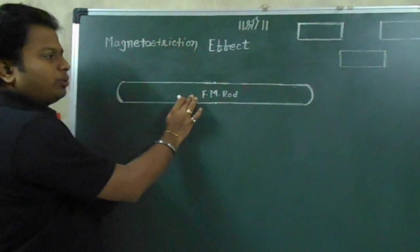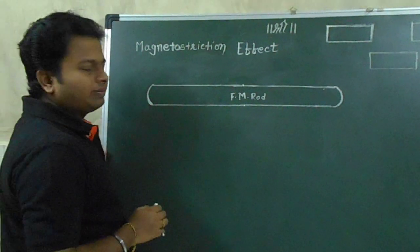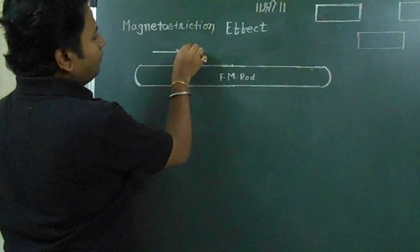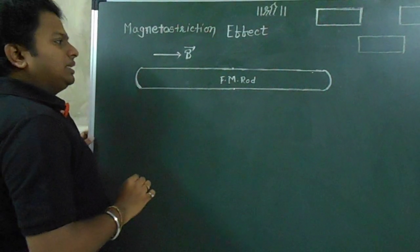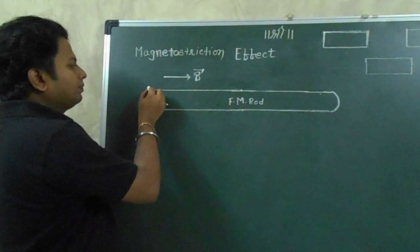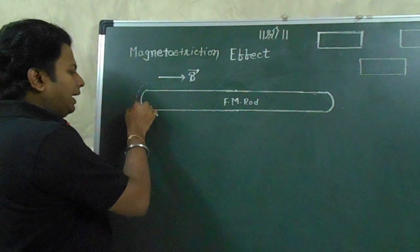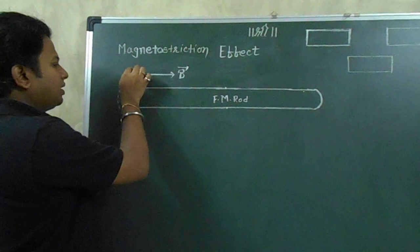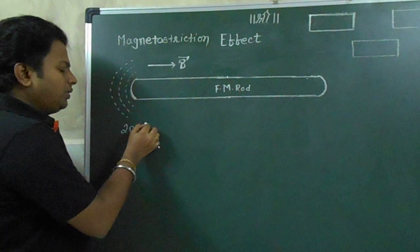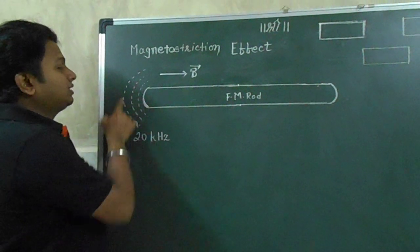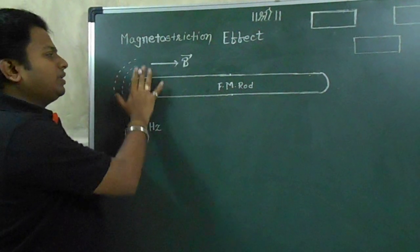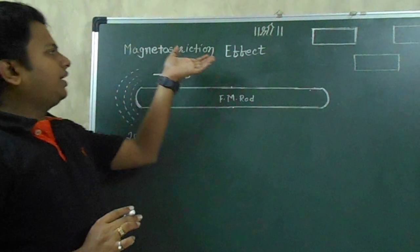The first requirement is a ferromagnetic rod of a suitable length. The second requirement is to apply an external magnetic field of induction B. The condition is that the length of the rod must be parallel to the direction of B. Under these conditions the rod will start vibrating — let's say along the x-axis. As a result, the surrounding air will also start vibrating with a frequency equal to the frequency of vibration of the rod. If this frequency exceeds 20 kHz, then the surrounding air molecules are vibrating with ultrasonic frequency, and as a result, ultrasonic waves are generated in the surrounding region. This effect is known as the Magnetostriction Effect.